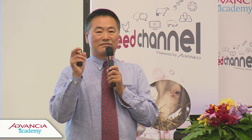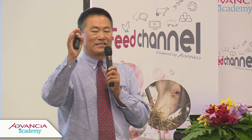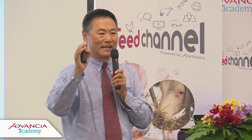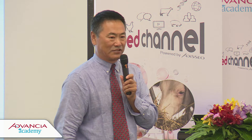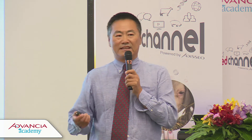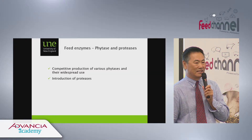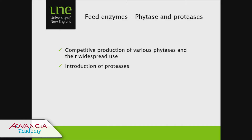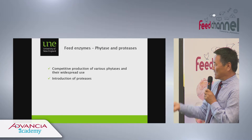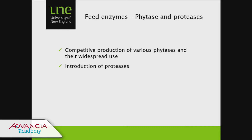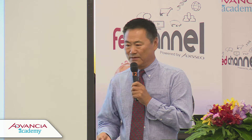Those are the feed enzymes in a quick snapshot. For viscous grains, the mechanism is viscosity reduction. For non-viscous grains, you're looking at opening up the cell walls so that nutrients enclosed or caged within them are released and exposed to endogenous enzymes. For vegetable proteins, it's quite a big challenge — to date we have not been able to make a lot of inroads into degrading the pectic polysaccharides present in vegetable proteins. There are also widely used phytases and proteases.